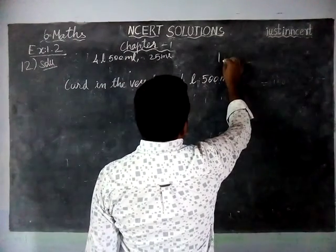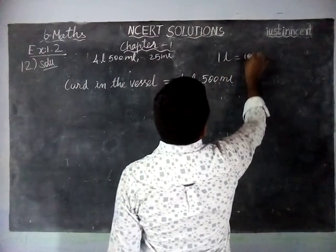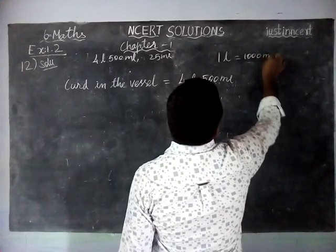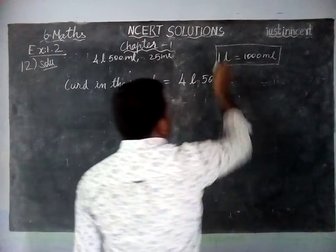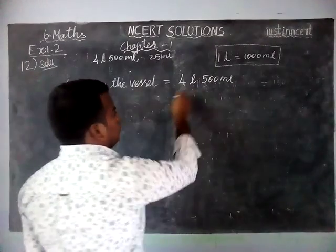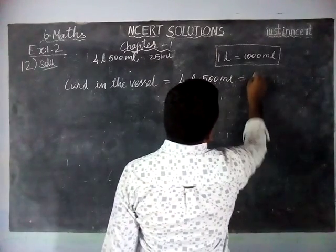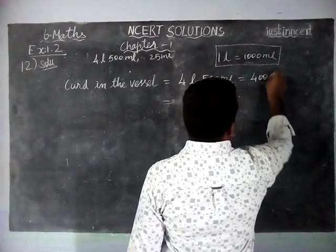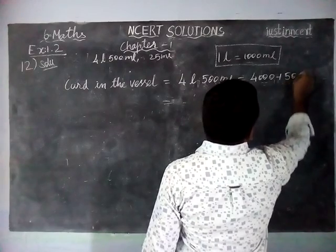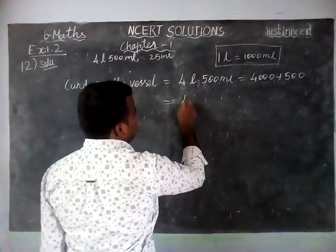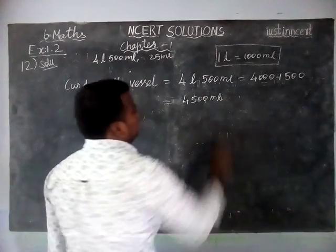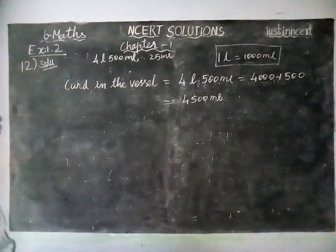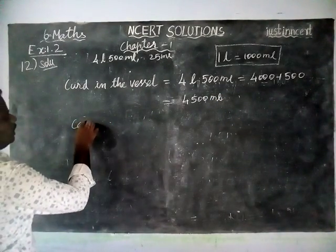1 liter is equal to 1000 milliliter. Now we are going to convert, so this is 4000 plus 500 equals 4500 milliliter. And now capacity of a glass is equal to 25ml.